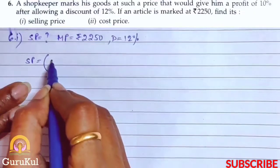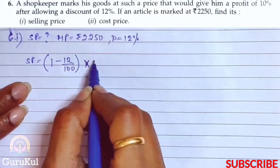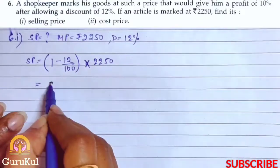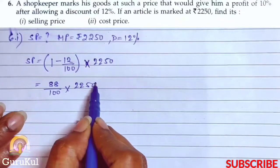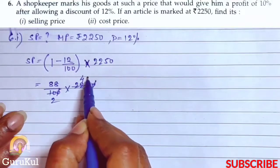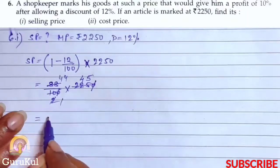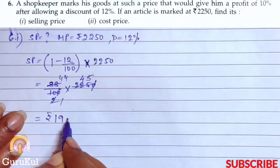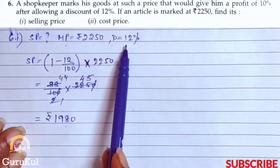So SP equals 1 minus 12 by 100 bracket closed of the marked price. That gives us 100 minus 12 is 88 by 100 into 2250. 0, 0 got cancelled. So SP is 1980. So selling price is rupees 1980 when mark price is given and discount is 12%.